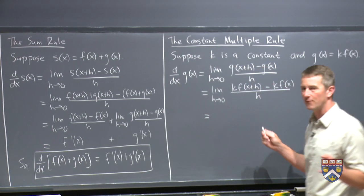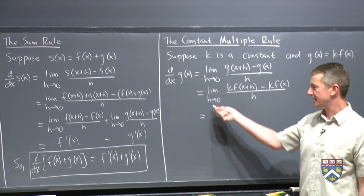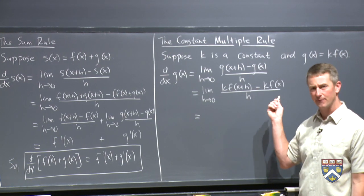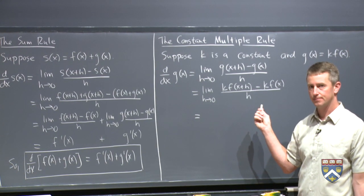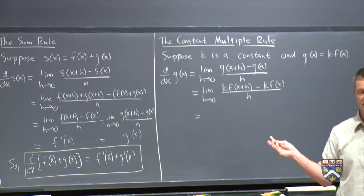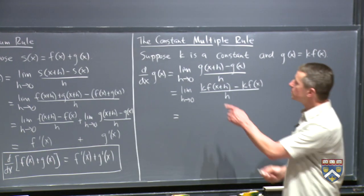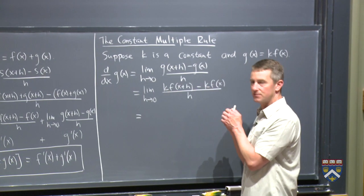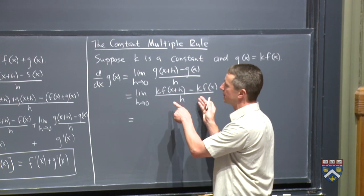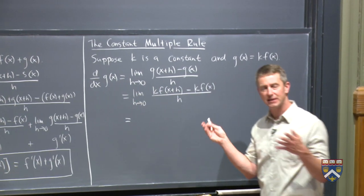So suppose k were say five. As h changes, does k being five change? No, five is always five. Five doesn't care what h is doing. So whether you multiply by five on the inside of this function or on the inside of this limit or on the outside of the limit, you should get the same answer.